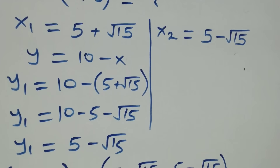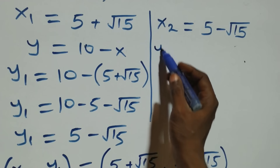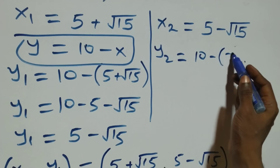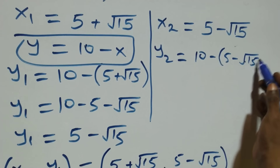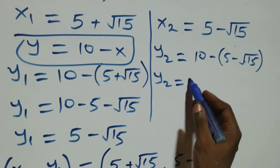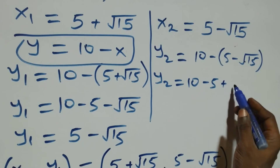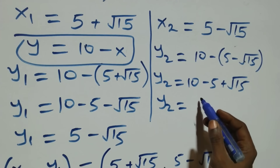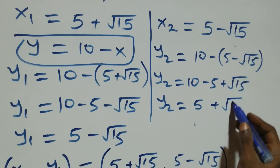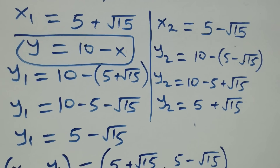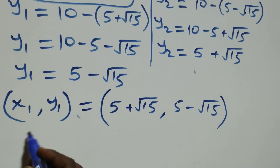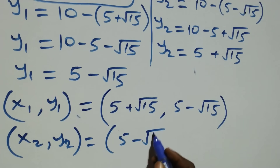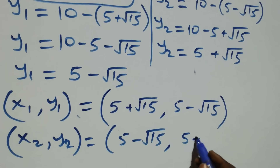For the second solution, y two equals ten minus x two, which is ten minus (five minus root fifteen). Opening the bracket, y two equals ten minus five plus root fifteen, giving y two equals five plus root fifteen. So the second solution set is x two equals five minus root fifteen, y two equals five plus root fifteen.